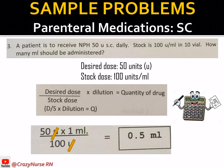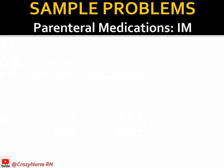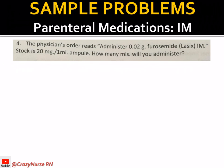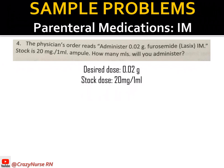For parenteral medication via intramuscular injection: the physician's order reads administer 0.02 grams of furosemide (Lasix) IM. Furosemide is the generic name — a diuretic — and Lasix is the brand name, usually enclosed in parentheses. The stock is 20 milligrams per 1 ml ampoule. The desired dose is 0.02 grams and the stock dose is 20 milligrams per 1 ml.